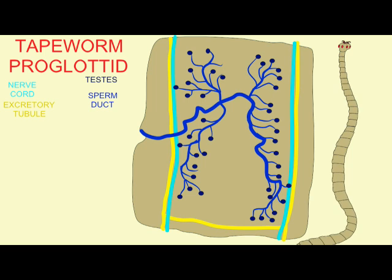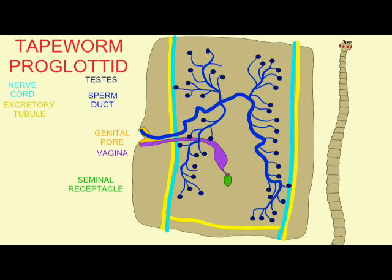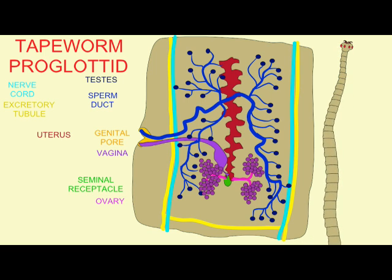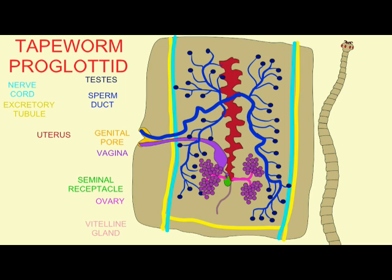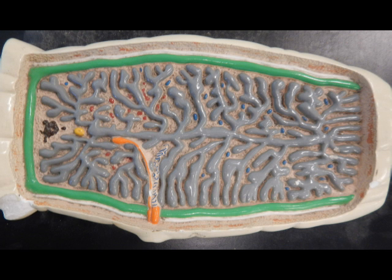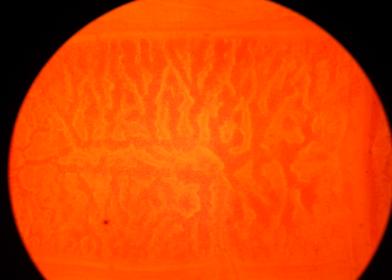Most tapeworms cannot fertilize themselves. Sperm enter the genital pore and fertilize ova, and embryos form in the uterus.